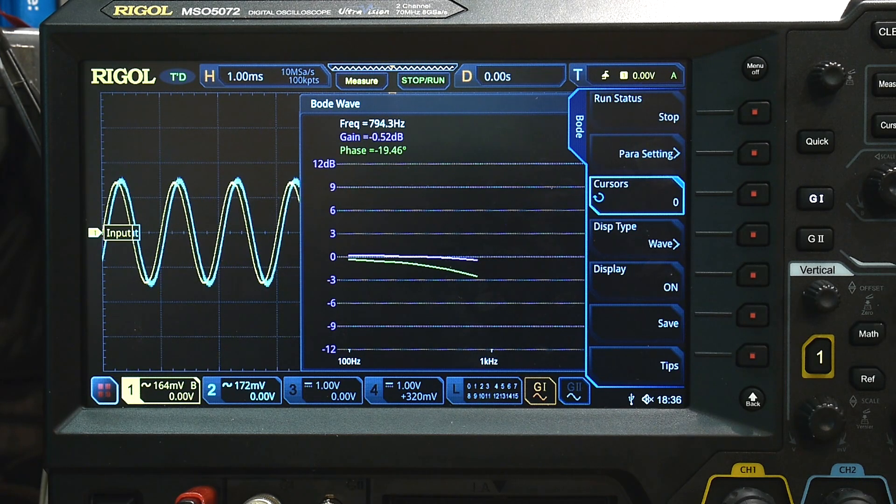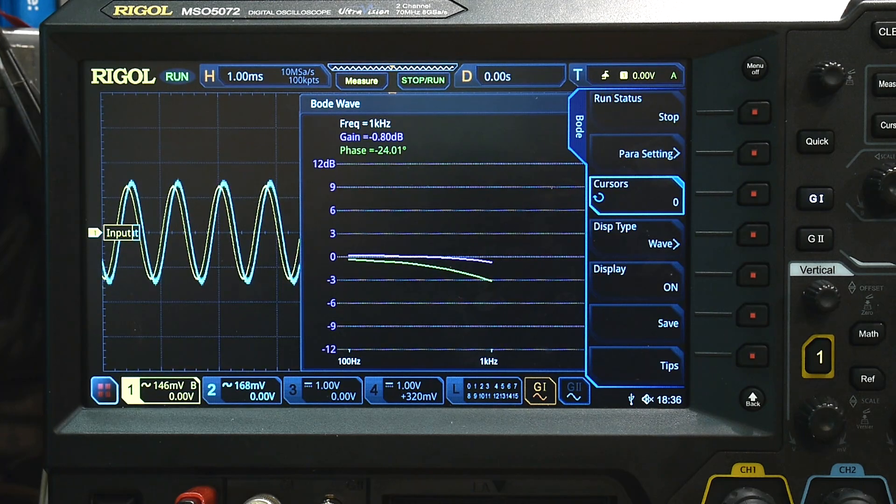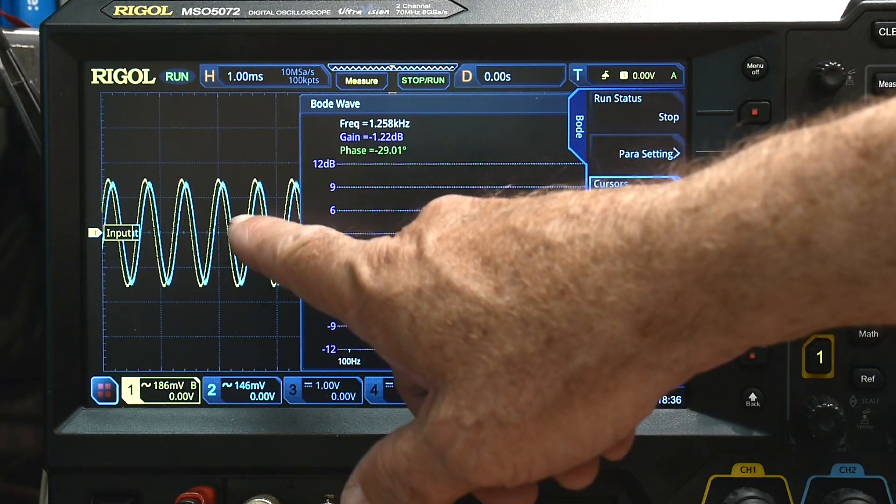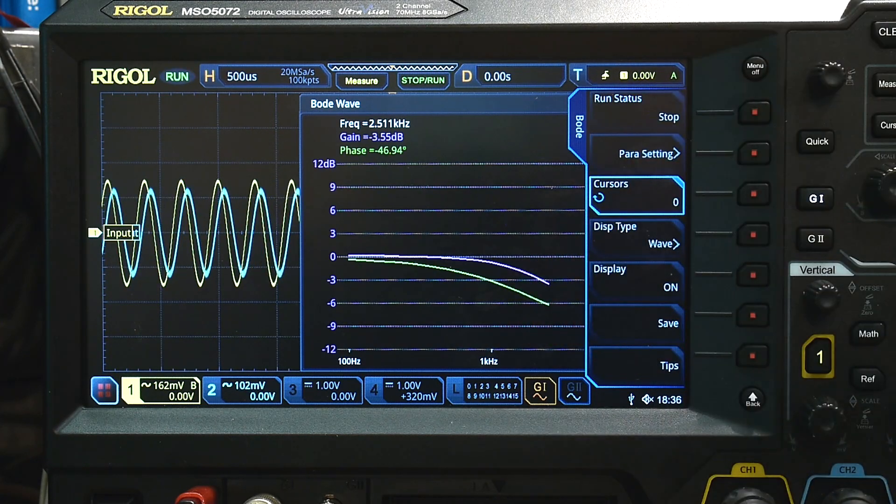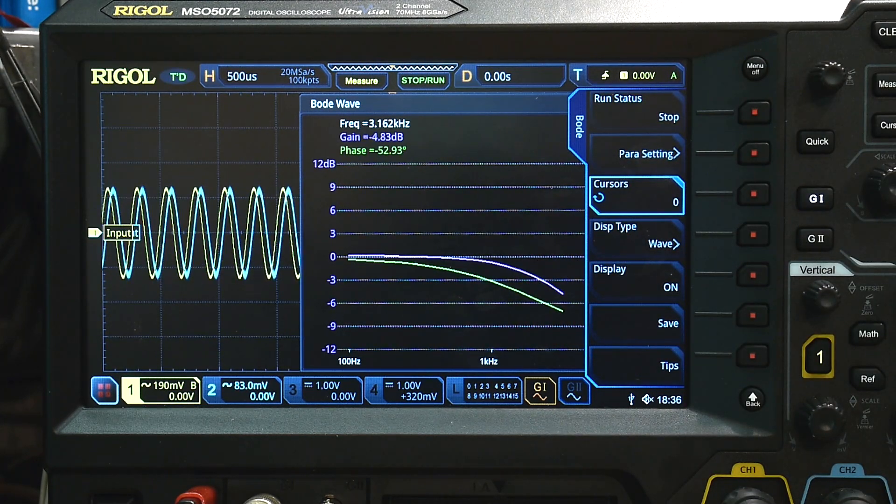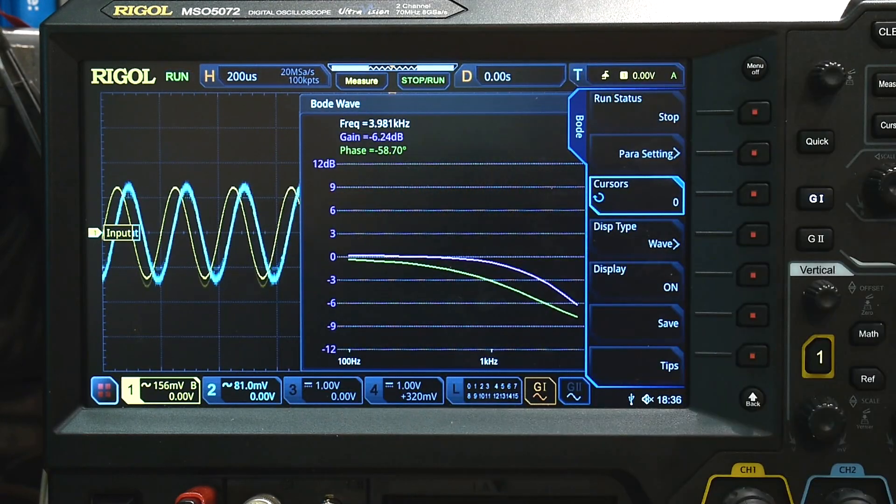And right around in here, it'll start to maybe get a little bit different. You can see it in two different ways. You can see the phase shifting, and you can also see the gain going down. The purple here is the gain, and the other line is the phase information. So you can see the phase is changing over there.